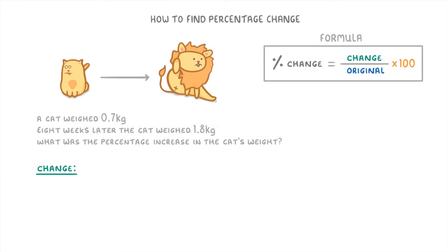This time, the change will be the difference between the two weights, which we find by doing 1.8 minus 0.7. So 1.1kg. And the original will be the 0.7kg that the cat started at.